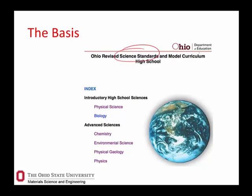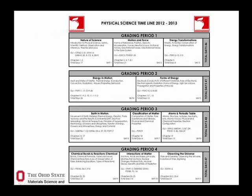This really goes right into science standards and curricula. In Ohio there's physical science that has loads of connections to material science. Then there are advanced sciences — chemistry, environmental science, some aspects of geology, and lots of physics — all linked directly to material science as well.